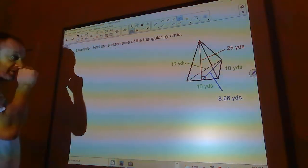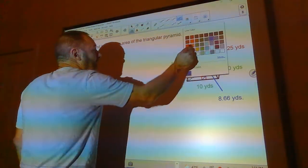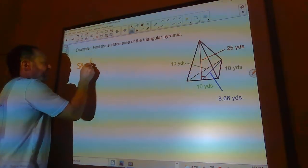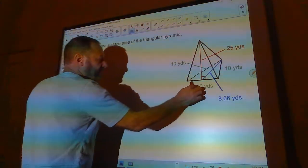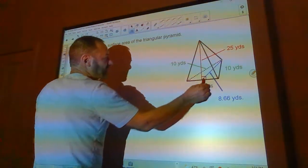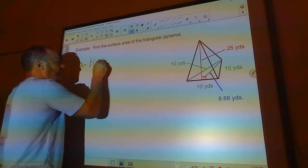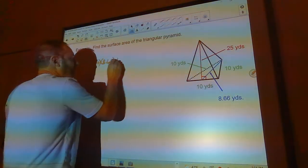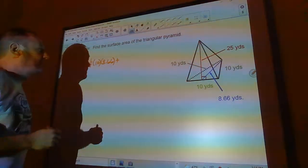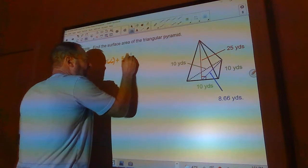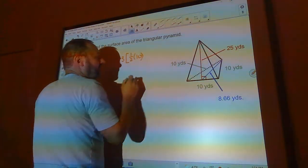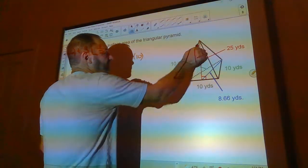So we'll do the base first. Surface area: it's a triangle, so it's half the base times the height. The base is going to be 10 and the height is going to be 8.66. Plus, now we've got the lateral faces. We're going to assume they're all the same, so there's three of them. They're triangles also, so half the base, which is 10, times the height, which is 25.